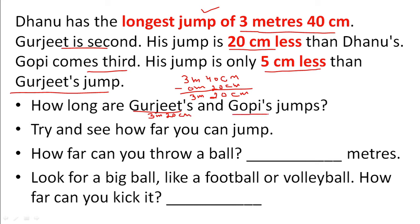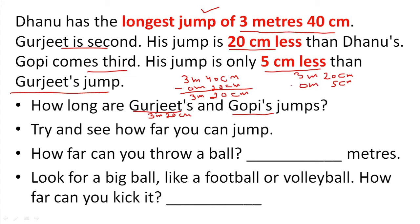Now Gopi's turn. Gopi jumped 5 centimeters less than Gurjit. Gurjit jumped 3 meters 20 centimeters. We subtract 5 centimeters: 20 minus 5 equals 15 centimeters. Meters stay at 3. So Gopi jumps 3 meters 15 centimeters.